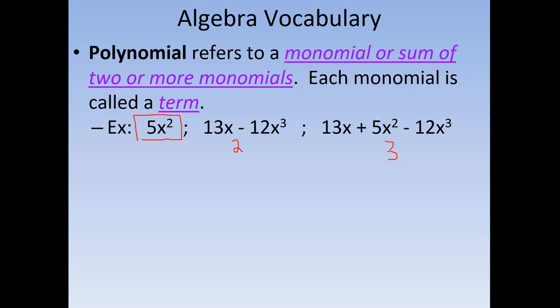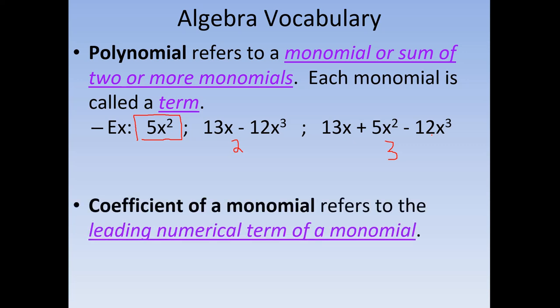The coefficient of a monomial is usually referring to the numerical symbol that's in front of the monomial. So in 5x squared plus 8x, the 5 is the coefficient for this term and the 8 is the coefficient for this term. Same thing here: the 13 is the coefficient for this term and the 12 is the coefficient in that term.